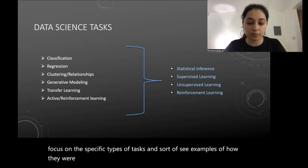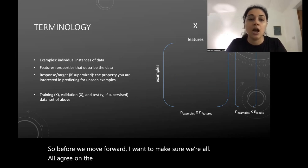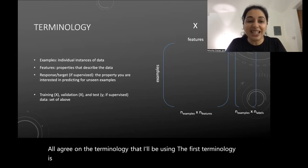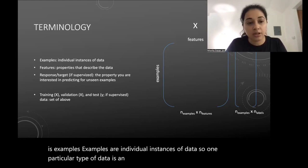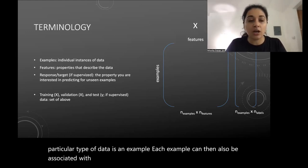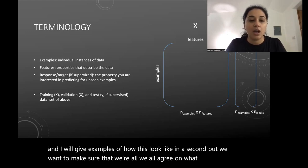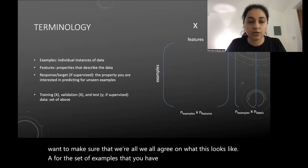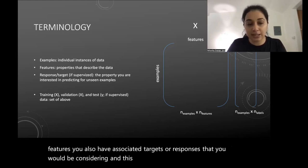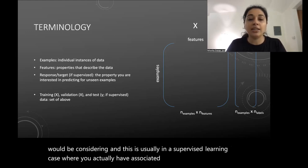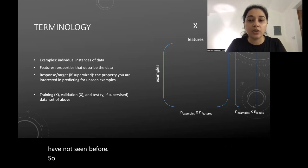Before we move forward, I want to make sure we all agree on the terminology I'll be using. 'Examples' are individual instances of data — one particular data point is an example. Each example can be associated with things called 'features' that describe the data. For the set of examples described by these features, you also have associated 'targets' or 'responses' that you would be considering — this is usually in a supervised learning case where you have associated values you want to predict.